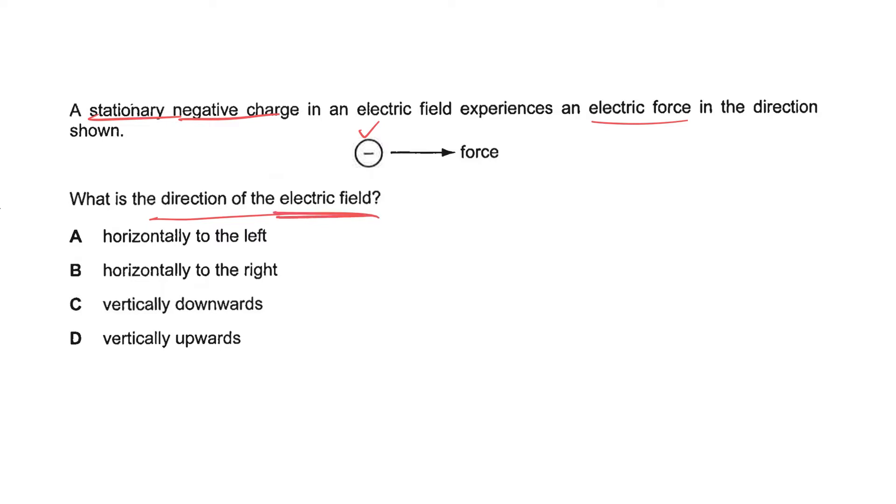In general, you know that electric field must be produced by an electric charge. So let's start with assuming I have a charge object here, and this charge object is the one that creates the electric field. The information given to you is the force experienced by the negative charge is towards this charge object here. Since it's moving towards, there must be attraction.